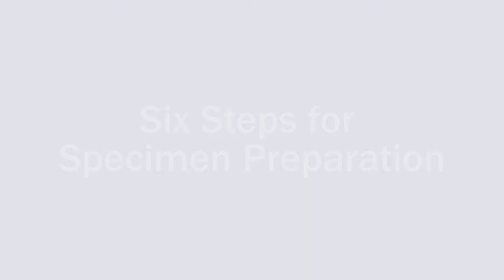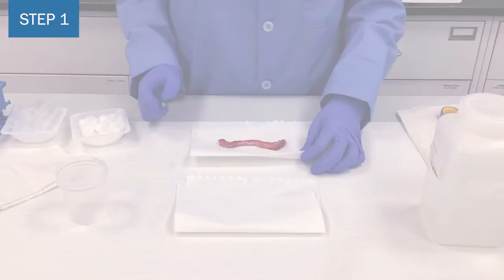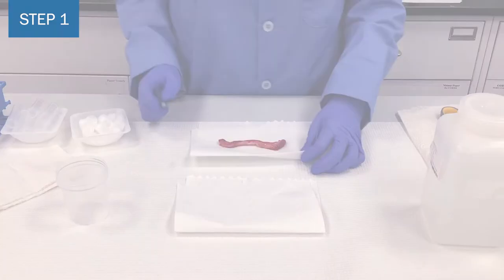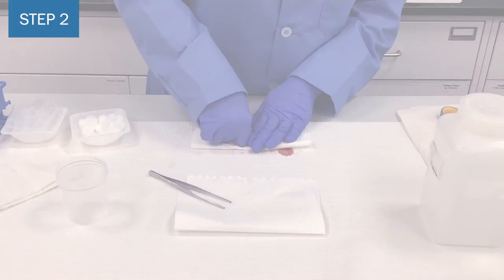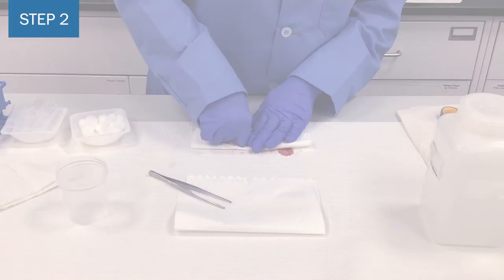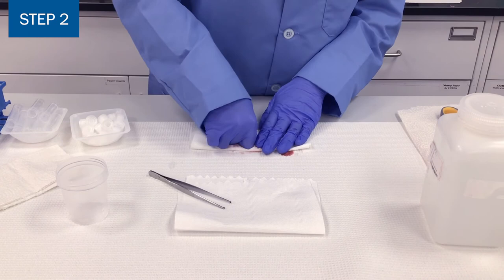To prepare an umbilical cord for submission, first, collect at least six inches of umbilical cord for testing, as shown here. As a visual point of reference, six inches is roughly the size of a full-grown adult hand. Second, discard any blood from the specimen. Removing excess blood can be done by lightly pinching the umbilical cord and milking it several times until free of blood.